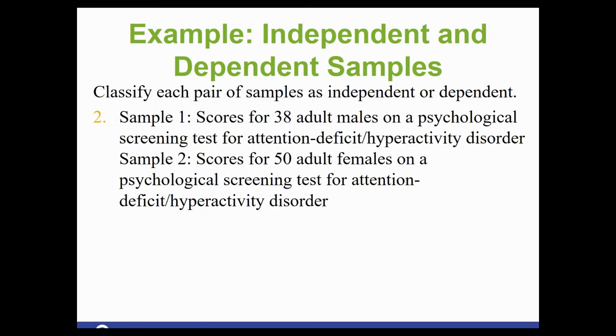Example two, sample one, the scores for 38 adult males on a psychological screening test for ADHD. Sample two, the scores for 50 adult females on a psychological screening test for ADHD. So your clue here is that they are two different groups. We've got males and females. And again, they could have the same sample size or they could be different. But if you see off the bat that they are different numbers, that is going to be an independent sample. Independent sample could have the same or different number of sample sizes.